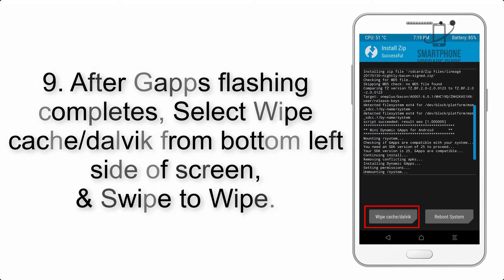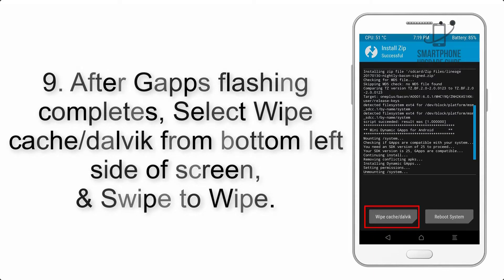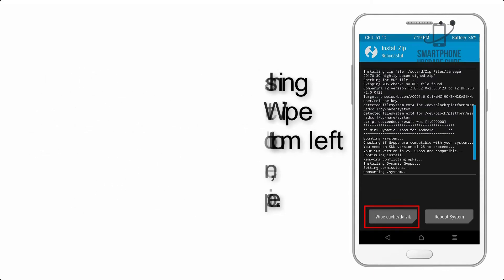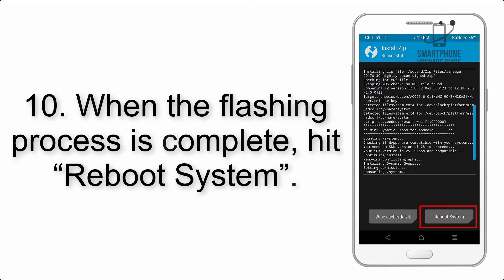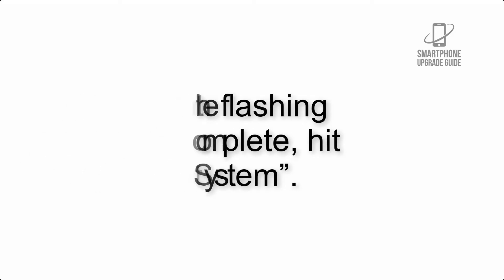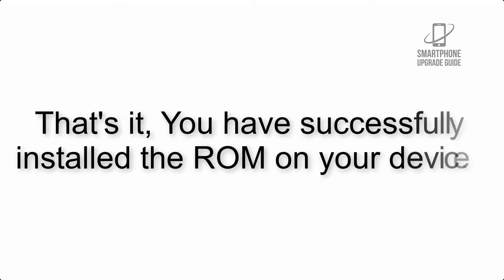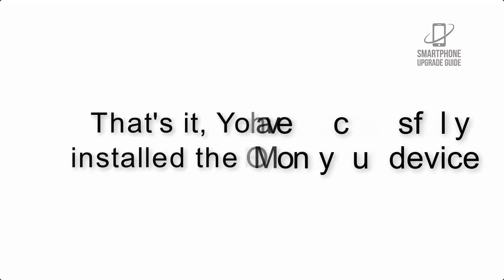Step 8: flash the GApps zip package in the same manner. Step 9: after GApps flashing completes, select Wipe Cache and Dalvik from the bottom left side of the screen and swipe to wipe. Step 10: when the flashing process is complete, hit Reboot System. That's it — you have successfully installed the ROM on your device.